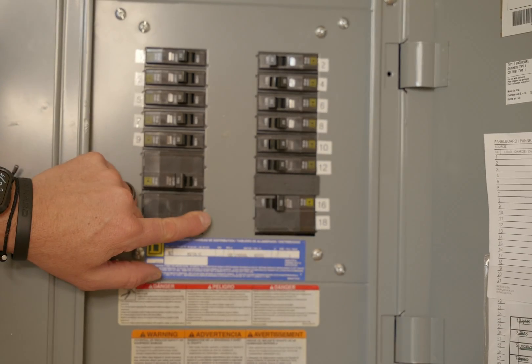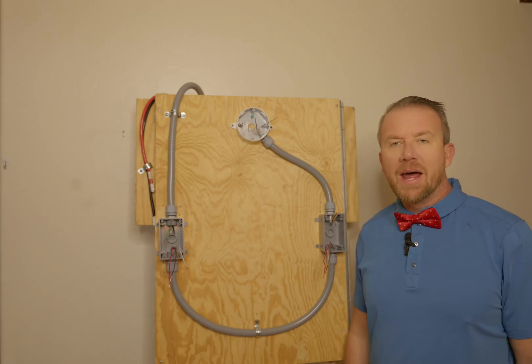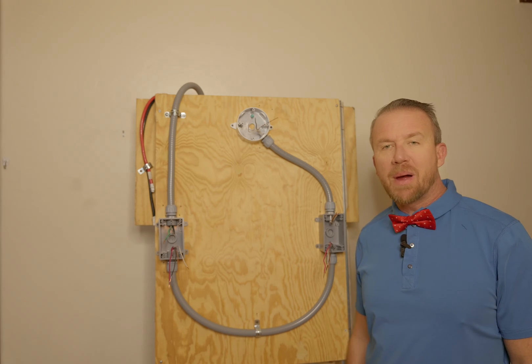And of course step one is always to shut off power before we begin. So let's head out to the circuit breaker panel and flip off that breaker. Now if you need to know how to find that breaker, watch this video right here. So we're going to flip off the main breaker.